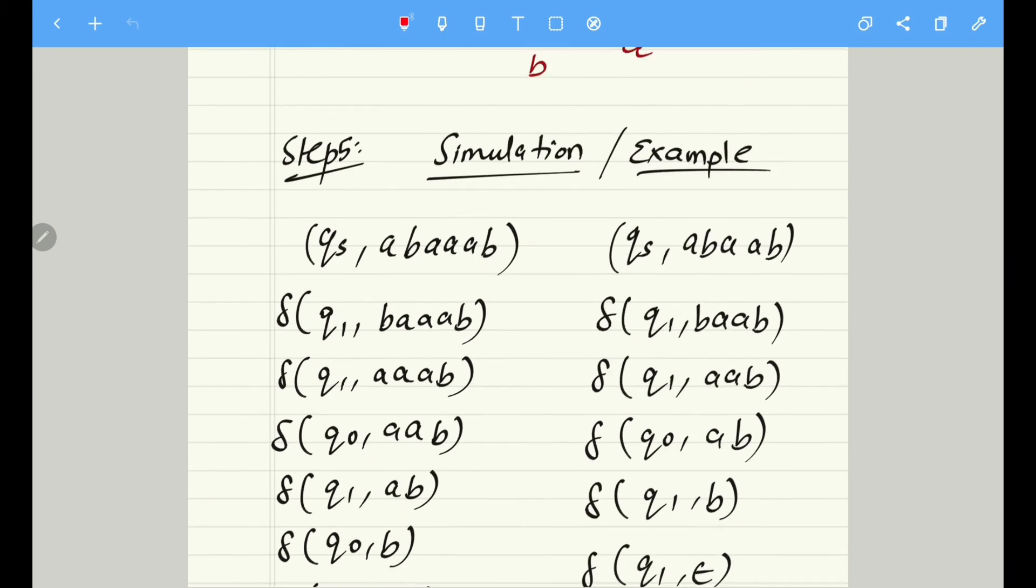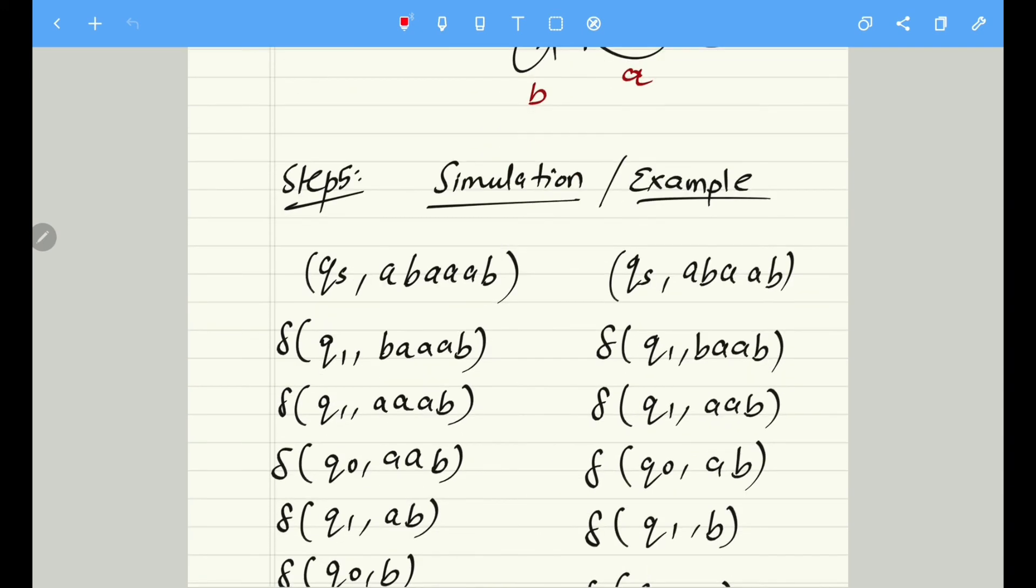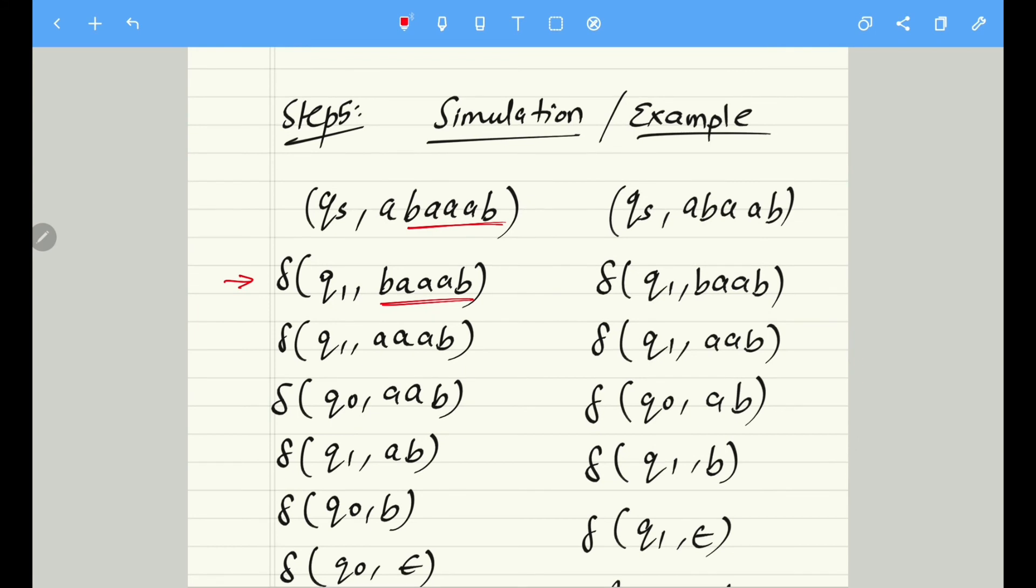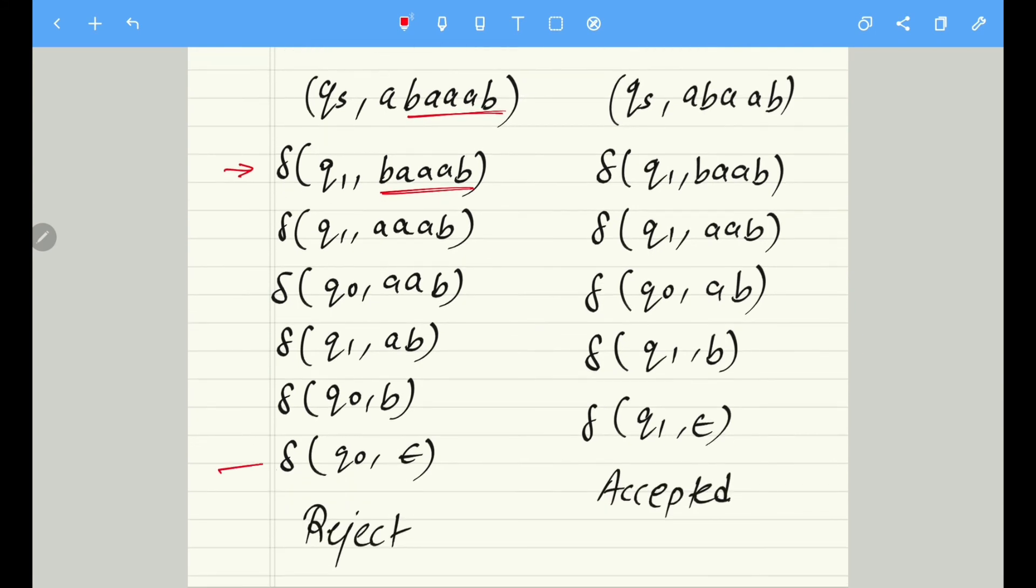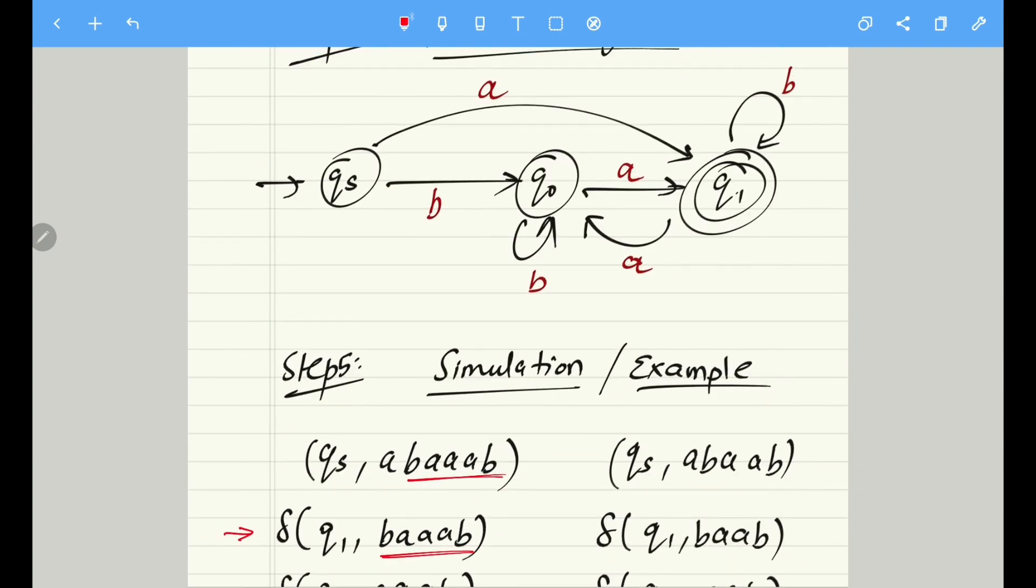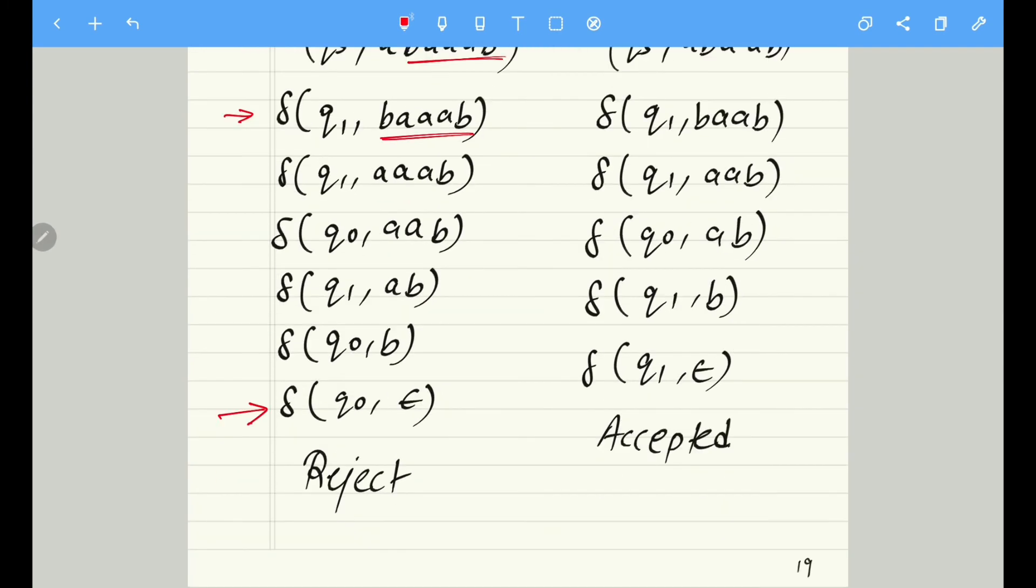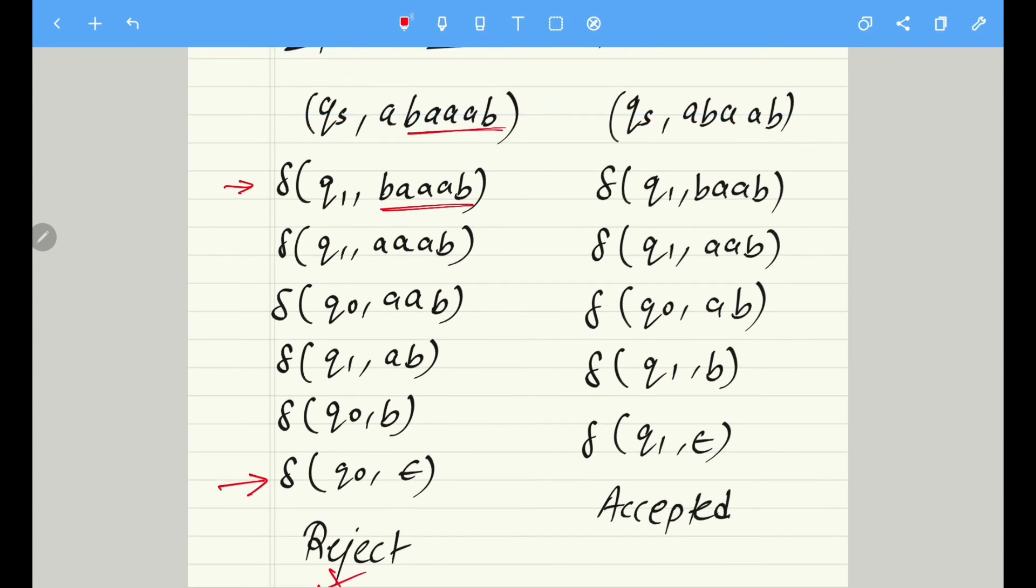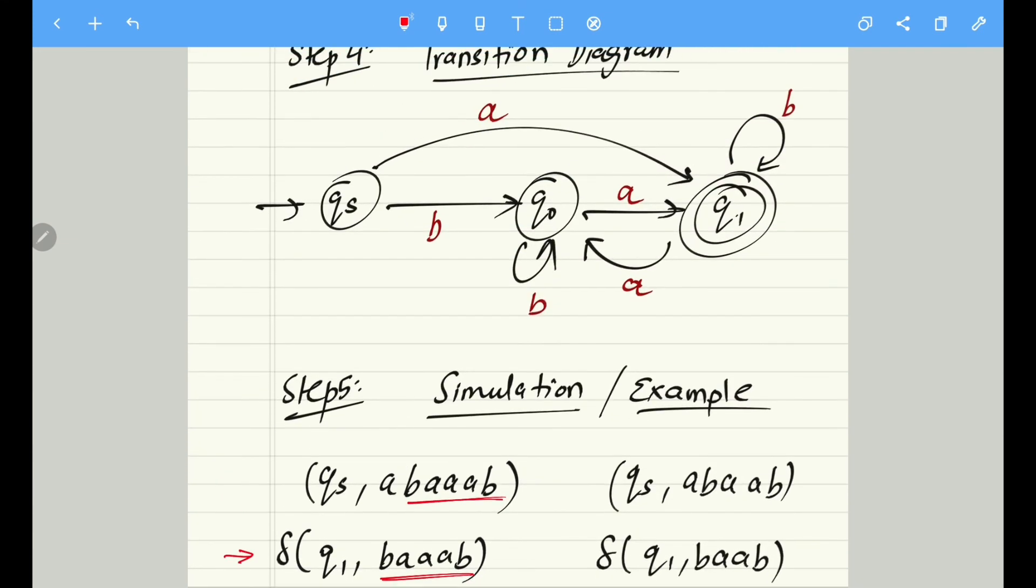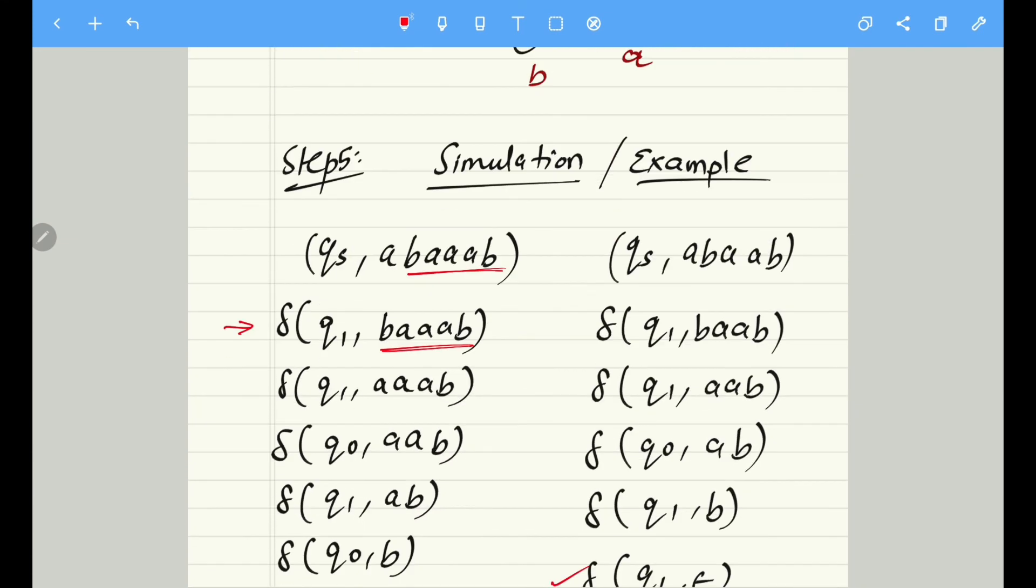As you can see, qs on a—just refer the diagram—qs on a goes to q1. That is what I have done over here. If we keep on continuing, we will come to a state q0 where all the inputs are accepted, but I know that q0 is not my final state and hence the string will be rejected. In the similar fashion over here, the machine ends in q1 and we know that q1 is my final state, and hence I will accept the string over here.